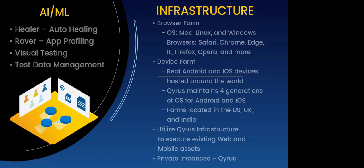Alongside this is the infrastructure. You can note the browser farms with a range of offerings in accordance to operating systems and browsers. Similarly, we have the device farms with a range of device options. These farms are also located across the U.S., U.K., and India to offer testing capabilities and device connection around the globe, 24/7. These devices, browsers, and all accompanying data sit on a private instance, ensuring both isolation and security. This infrastructure can also be implemented alone without the Kairos automated solutions as an infrastructure as a service — you can execute pre-existing web and mobile assets utilizing the Kairos infrastructure.